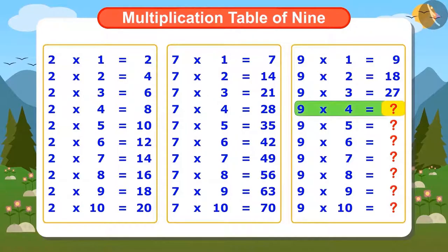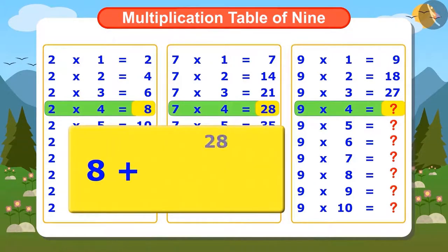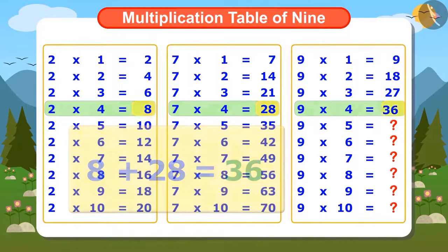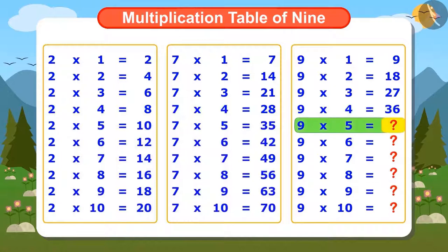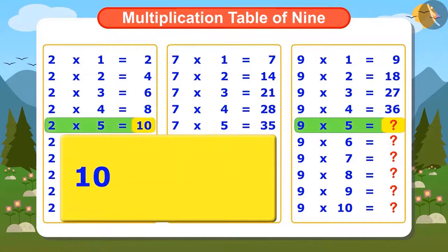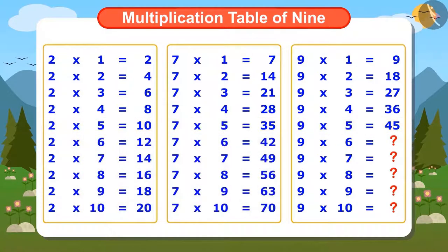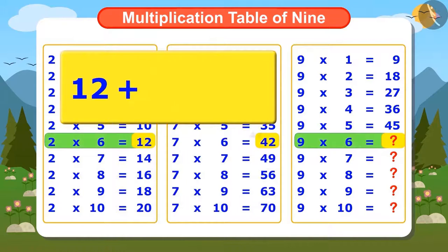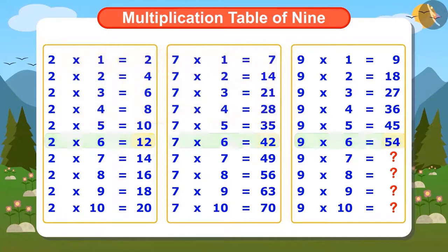Now to find out 4 times 9, I add the 4th numbers of both the tables. 8 and 28, the answer is 36. Similarly, to know the next number, add 10 and 35. The answer is 45. And to find the next number, we add 12 more to 42. The answer came as 54.